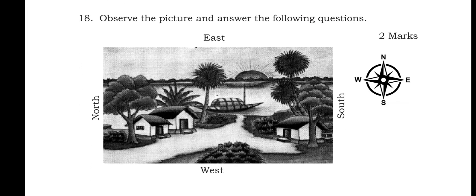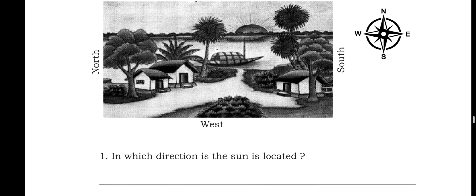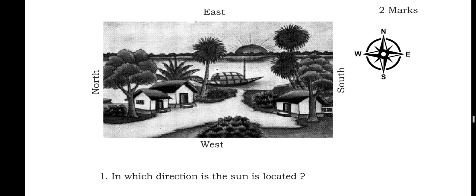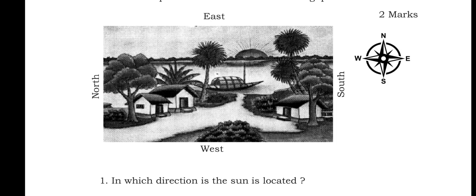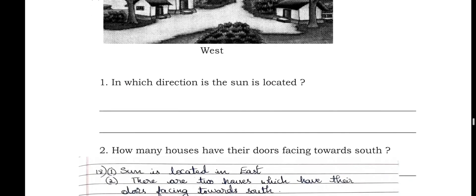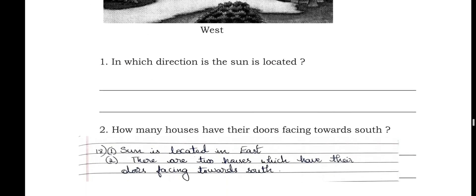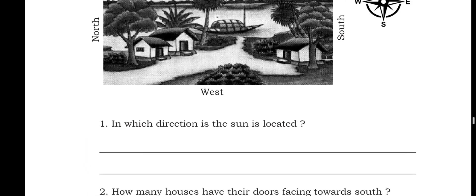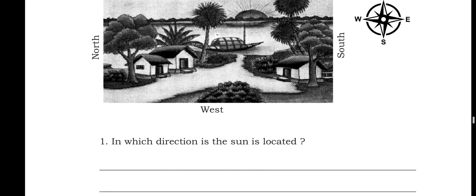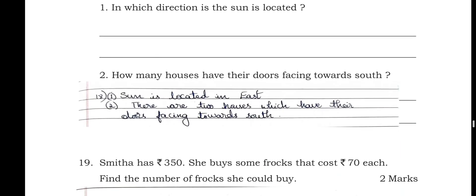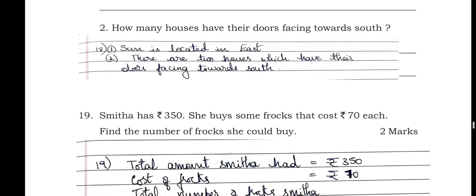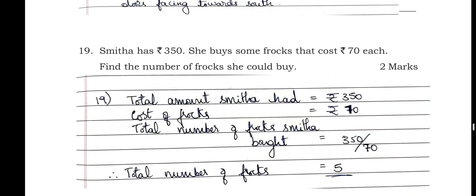Observe the picture showing north, east, south, and west. In which direction is the sun located? Clearly, the sun is located in the east direction. How many houses have their doors facing towards south? There are two houses whose doors are facing towards south, as seen in the diagram.